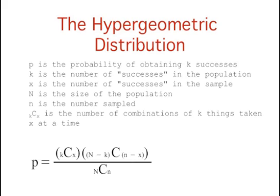k is the number of successes in the population, x is the number of successes in the sample, capital N is the size of the population, lowercase n is the number sampled, and kCx is the number of combinations of k things taken x at a time.